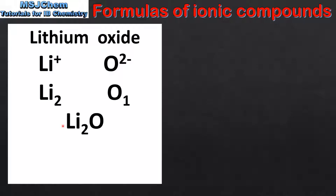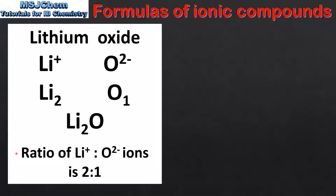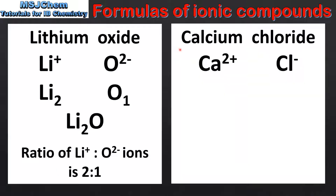We then write it as a formula which is Li₂O. An important point to note is that if the subscript is 1 we do not include it in the final formula, because it's assumed that no subscript means 1. So from this we can determine that a formula unit of lithium oxide has a ratio of lithium ions to oxide ions of 2 to 1. This 2 to 1 ratio is necessary to make lithium oxide an overall neutral compound.